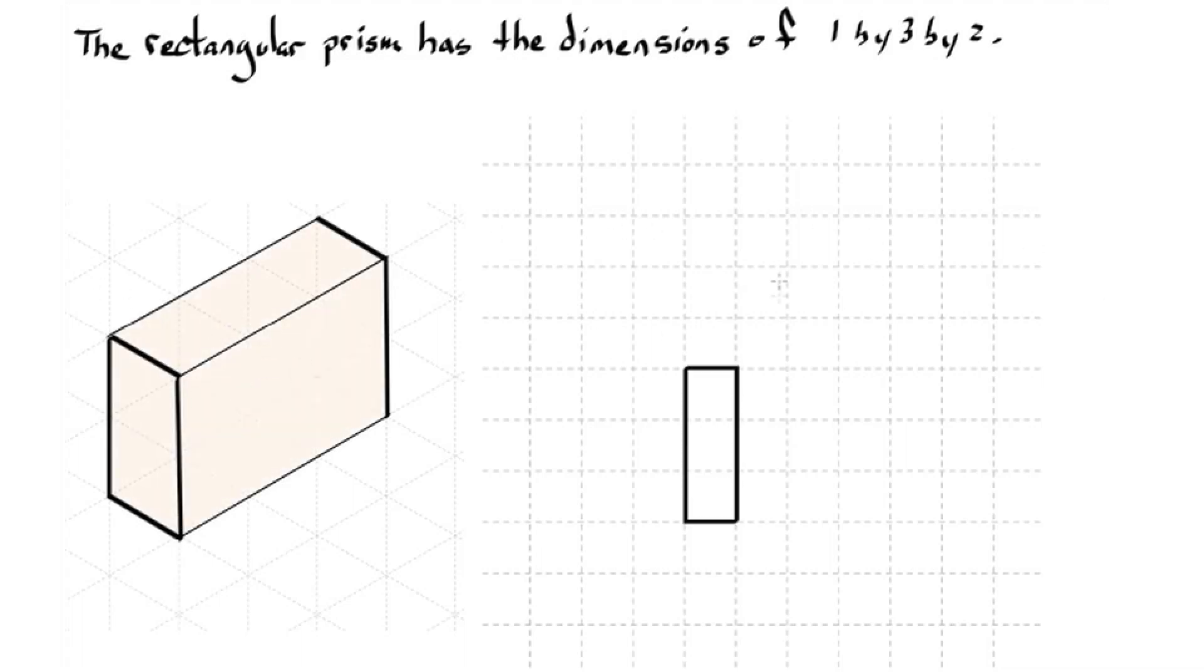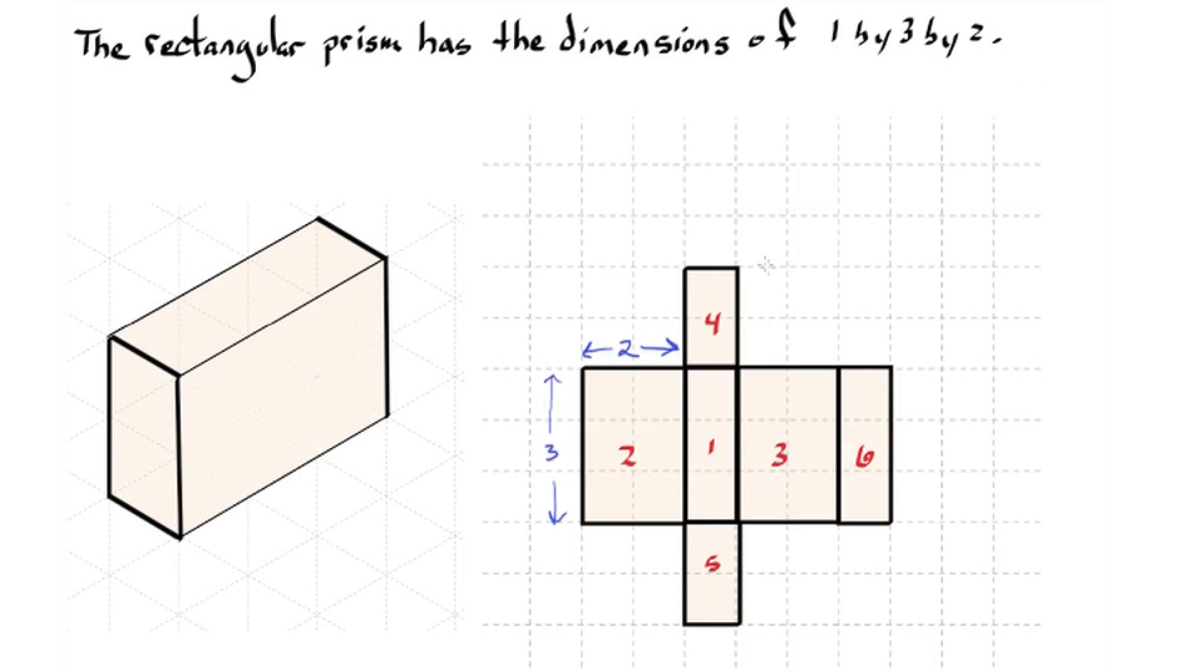So I know I'm going to need two one by three rectangles, two two by one rectangles, and two three by two rectangles, with six quadrilaterals total. And now I'm going to label all the sides, all the dimensions of the net. And note this is not the only correct possible answer. There are many combinations of nets that will work for the same figure.